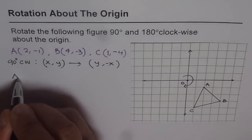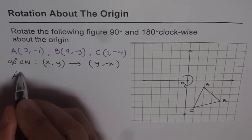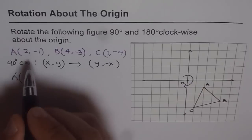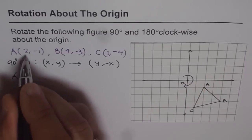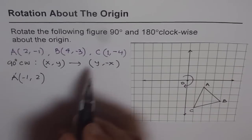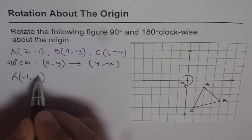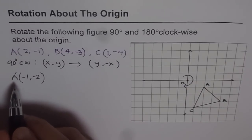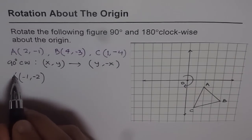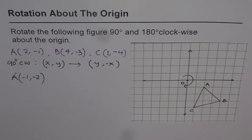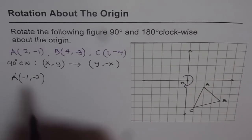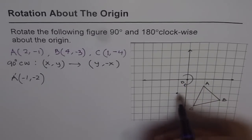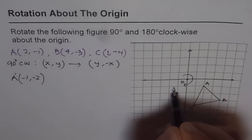Let's apply this transformation and write down the new points. A dash is the image of A after 90 degrees clockwise rotation. We swap the points — writing X first, which is minus 1, and then 2. Next, we change the sign for Y: 2 becomes minus 2. So A dash is at (-1, -2). Let's locate this on the figure.